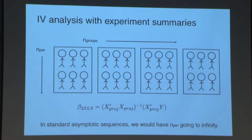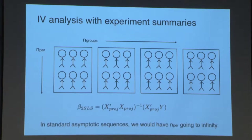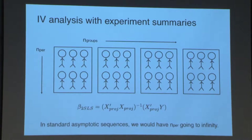What's different in this setting is we want to do all this analysis with just summary statistics. All these experiments have been run over time, and we may not have the metadata or want to work with the raw data. We work with summary statistics: n-per (number of people per experiment) and n-groups (number of experimental conditions). In standard IV asymptotics, n-per goes to infinity with a fixed number of instruments, but here we're accumulating more experiments of approximately the same size.